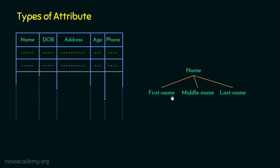It depends — it's the prerogative of the parents to name their kids as they wish. Some parents may give only a first name, some a first name and last name, and some a first name, middle name, and last name. If that is not properly handled in the database, it leads to inconsistency. So this name attribute is an example of a composite attribute — it is non-atomic in nature because it can be decomposed further into smaller units like first name, middle name, and last name.